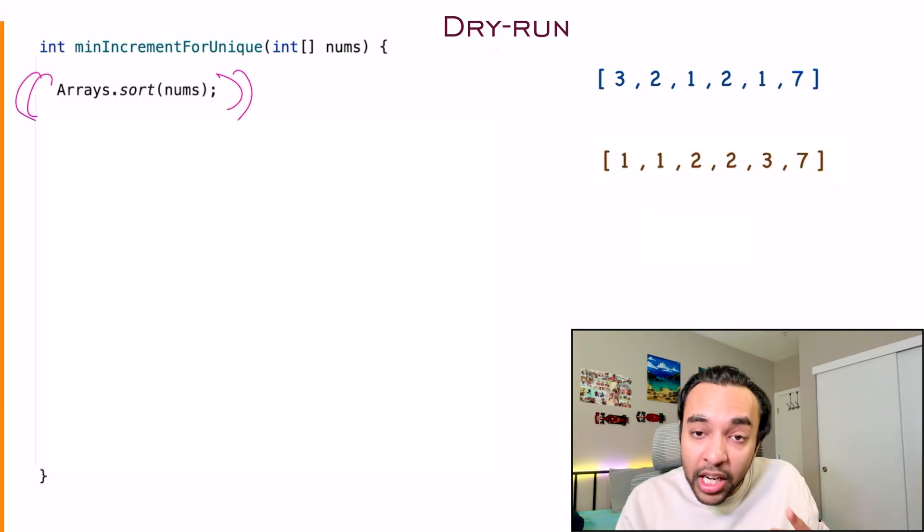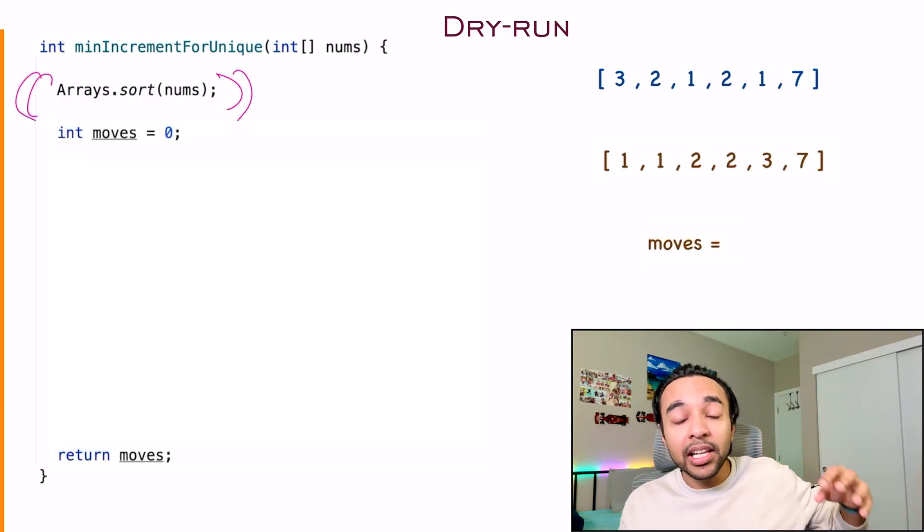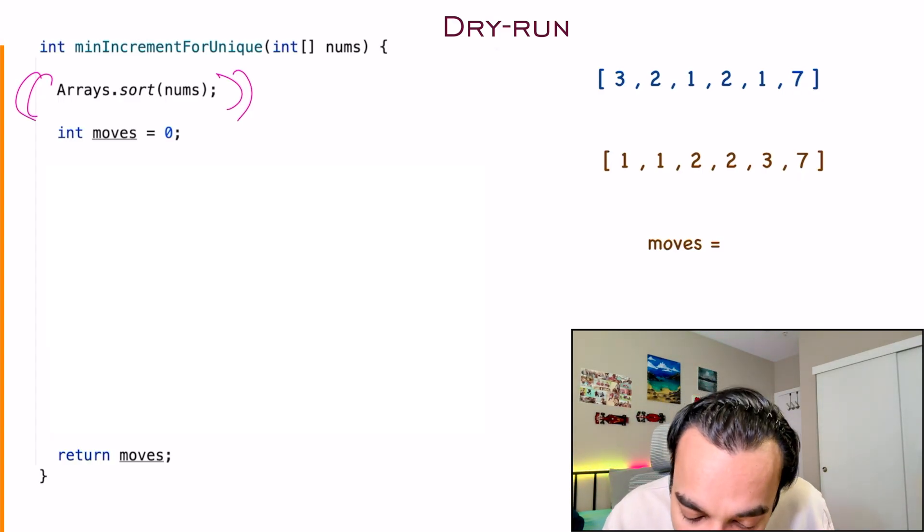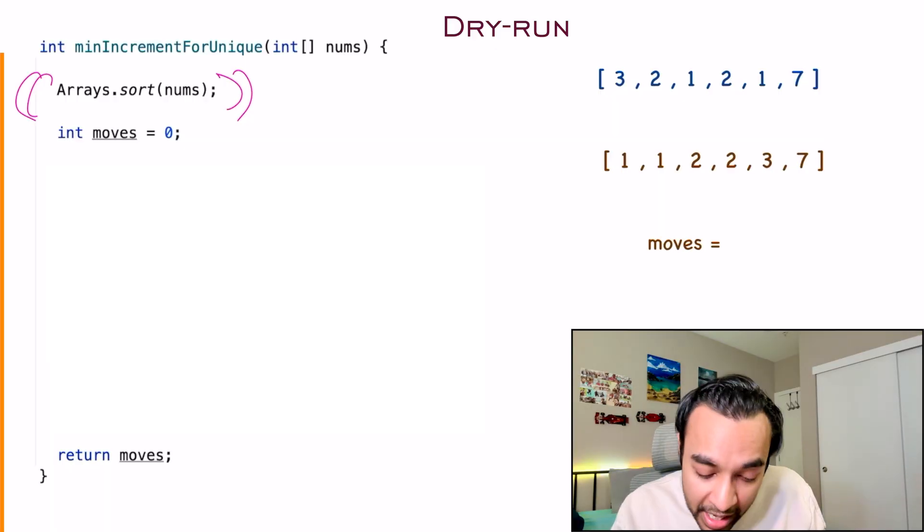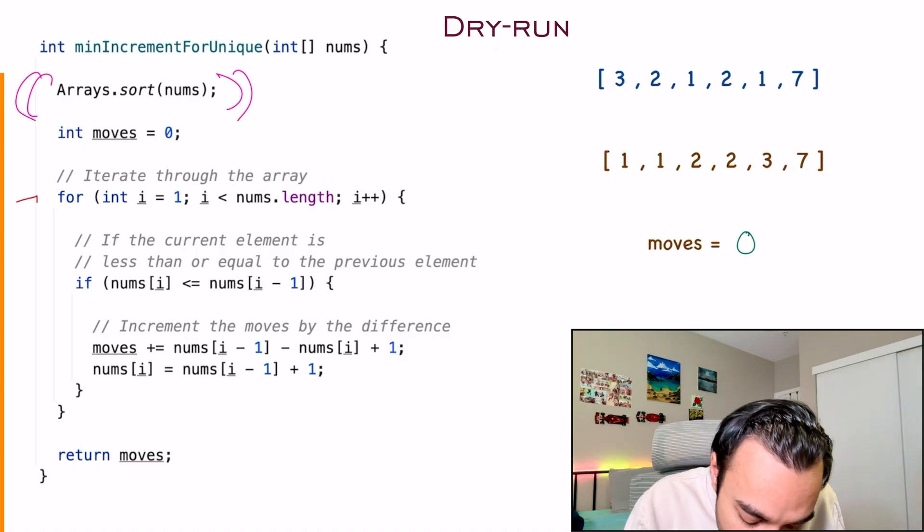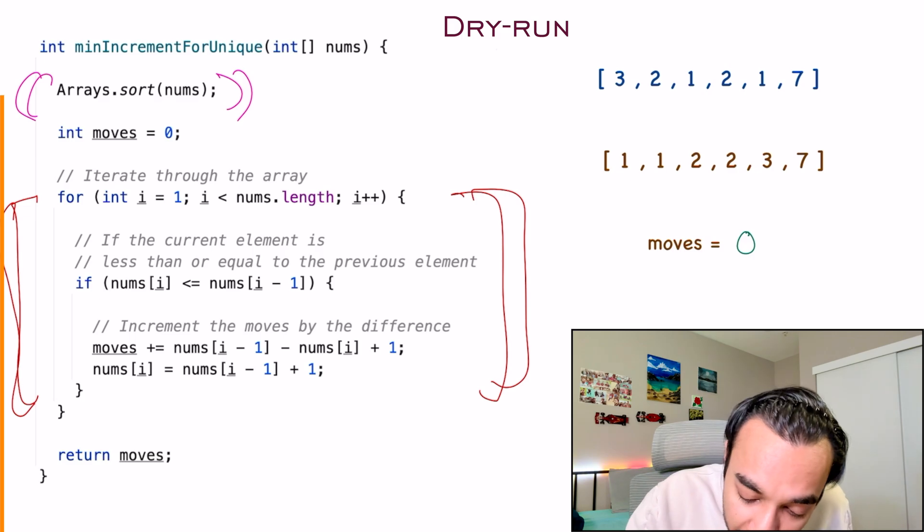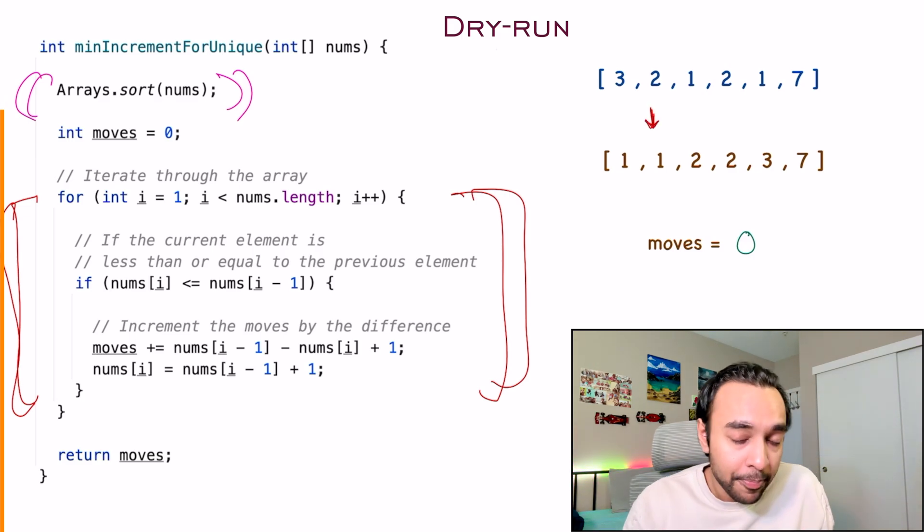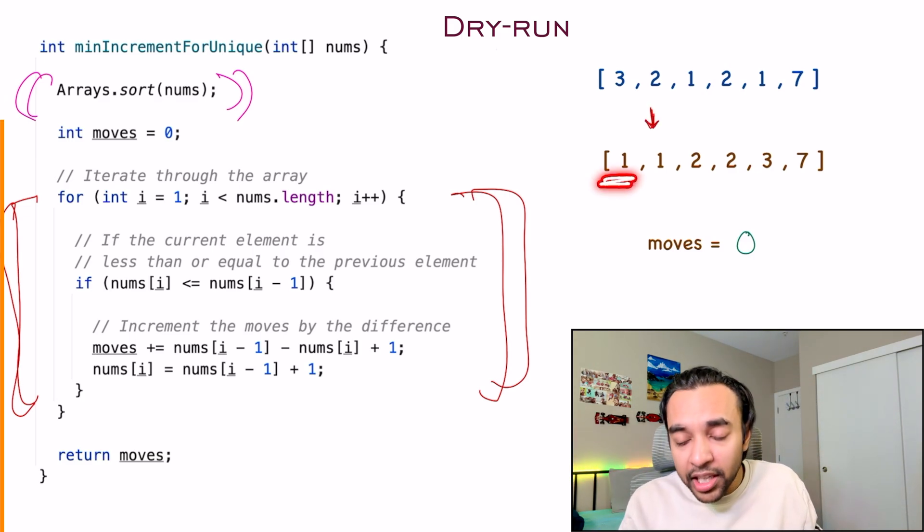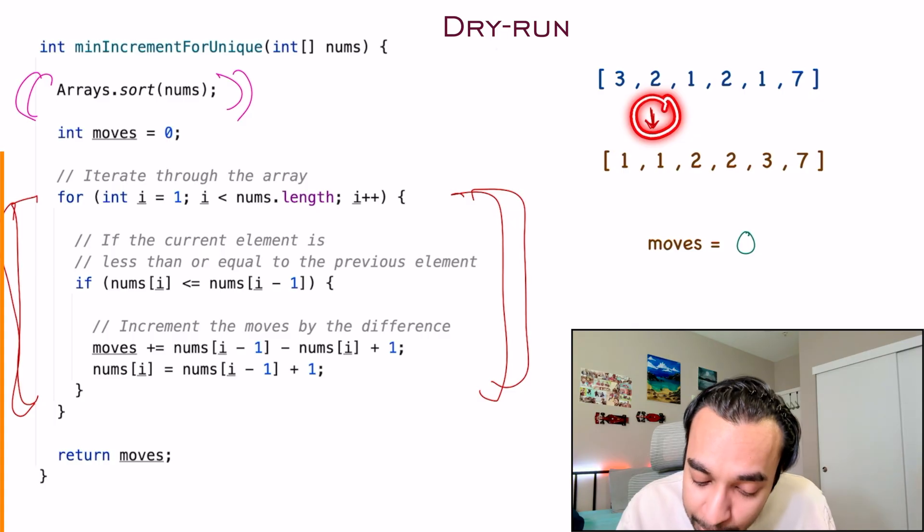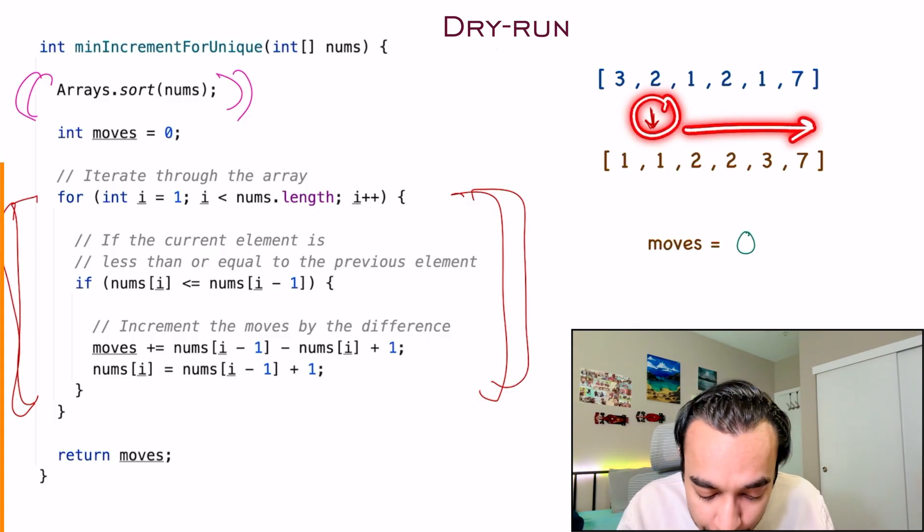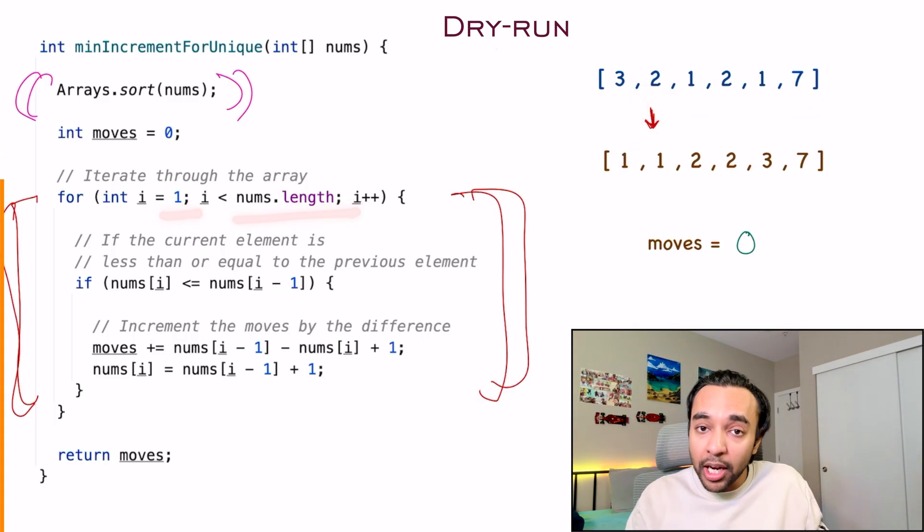From our solution that we discussed, what's the first thing that we do? First of all, we sort our array and we also initialize a variable that's going to calculate the total number of moves or operations that I need. So my array changes to something like this and currently I have 0 moves available. What do you do next? You now want to iterate through every element of the array. So I'll have a pointer that starts at the first index of my array, because for the 0th index, you pretty much cannot do anything. You don't have any element to compare with. And this pointer will move all the way up to the very end.